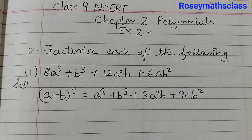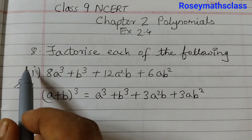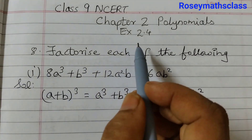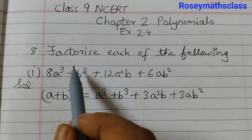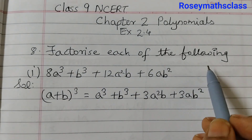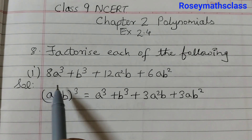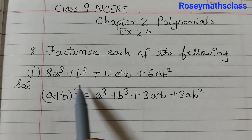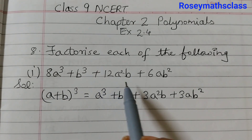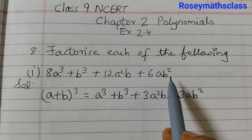Hello students. In this video we shall discuss question number 8 of exercise 2.4: factorize each of the following. There are 5 parts to this question. The first one is 8a cubed plus b cubed plus 12a squared b plus 6ab squared.